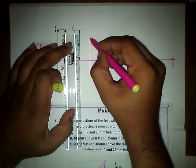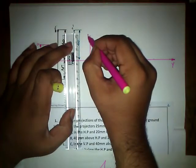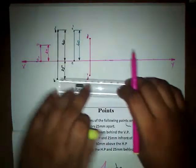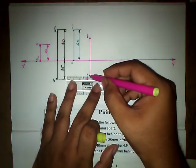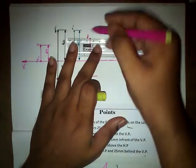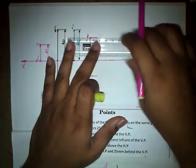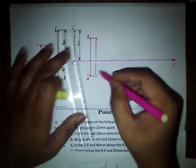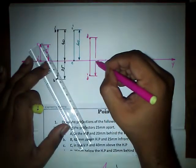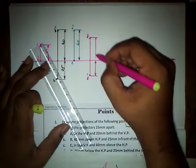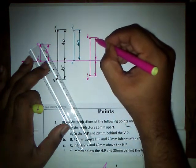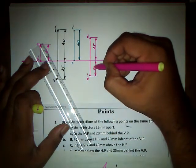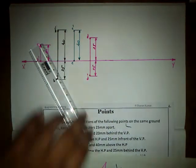25mm above is point d, and 25mm below is point d dash. Let us mark the distances — just touch the tip. This is point d at 25mm and this is going to be 25mm for d dash.